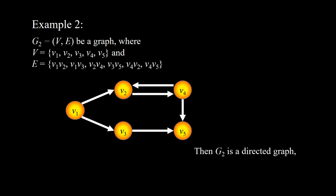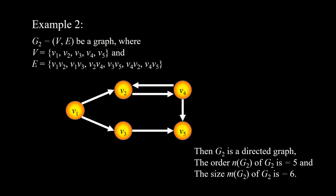G2 is a directed graph. The order n(G2) of G2 is 5, and the size m(G2) of G2 is 6.